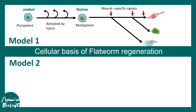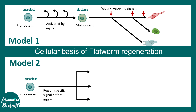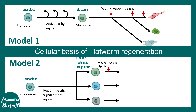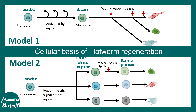In model two, neoblasts form different lineage-restricted progenitors before injury occurs. Based on the location where a neoblast is situated, it may already be lineage-restricted to certain progenitors. When a wound-specific signal then arrives, it creates a blastema precursor which eventually produces mature cell types. There is substantial evidence supporting aspects of both models.